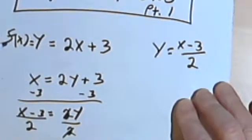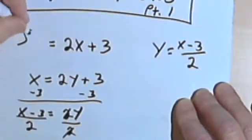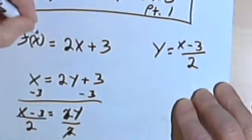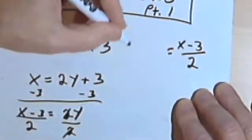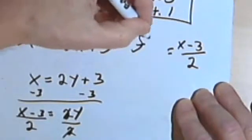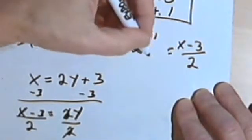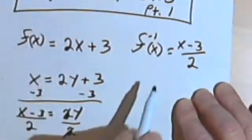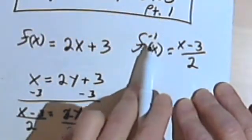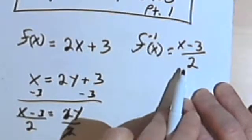And if we want to use function notation, the first one we'll call f of x. And for the inverse, I'm going to write f with what looks like a negative 1 exponent — but we're not going to say that — of x. This is pronounced f inverse of x, which equals x minus 3 over 2.